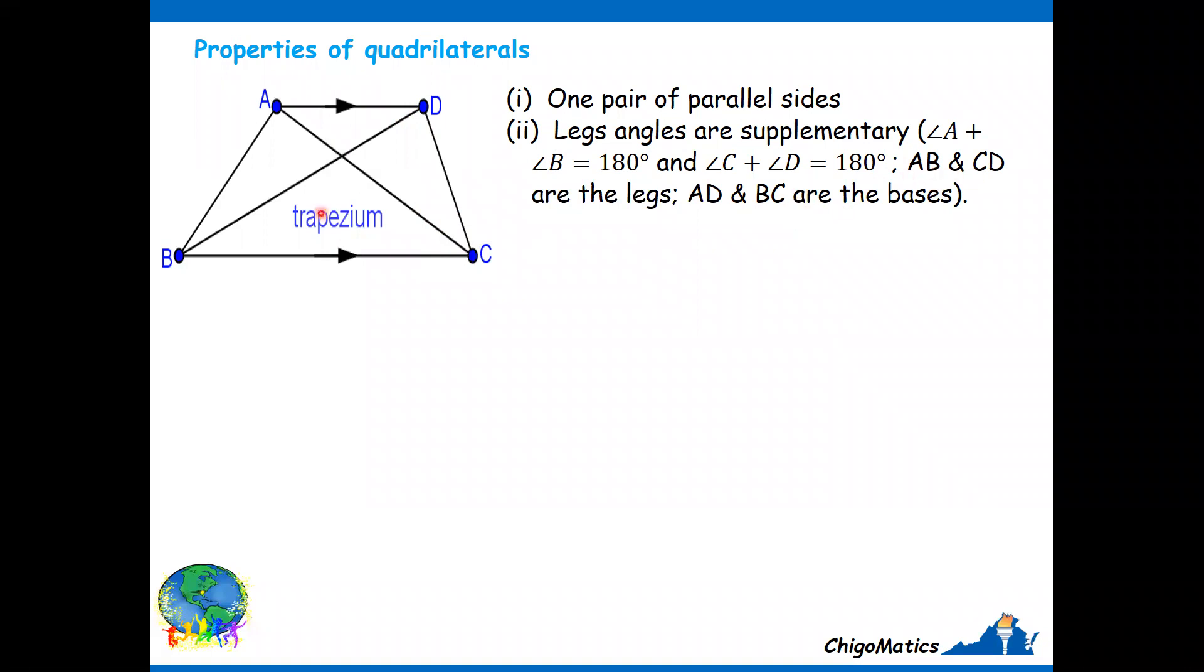And of course, I've already said that DC and AB are the legs. AD and BC are the bases. Then when we have a trapezium which is isosceles, that means AB and DC should be equal. Then we say it is an isosceles trapezium. Otherwise, we have nothing to say. It will be simply a trapezium.